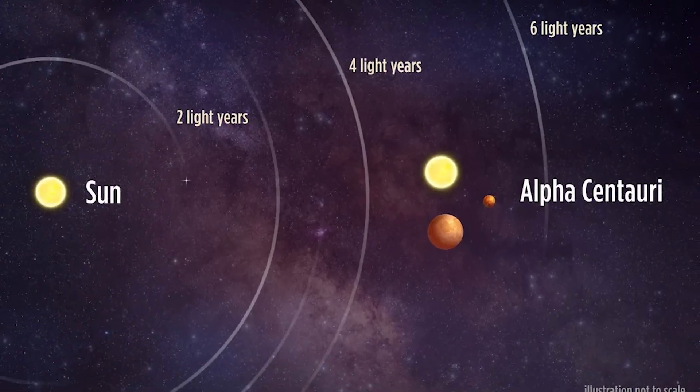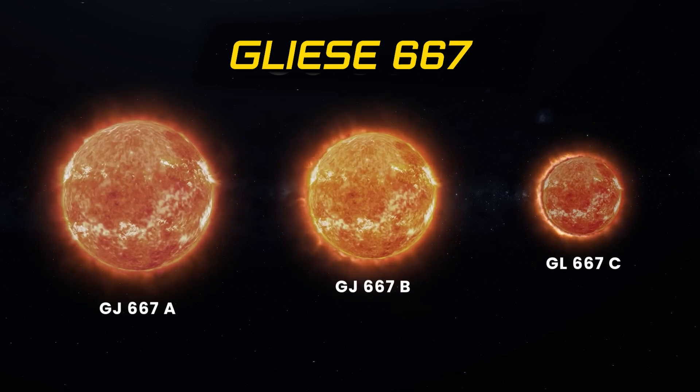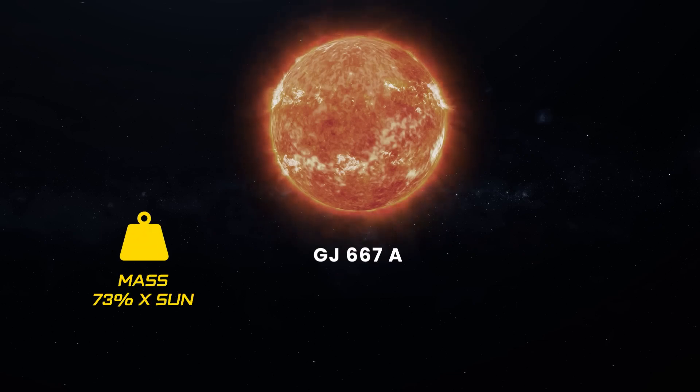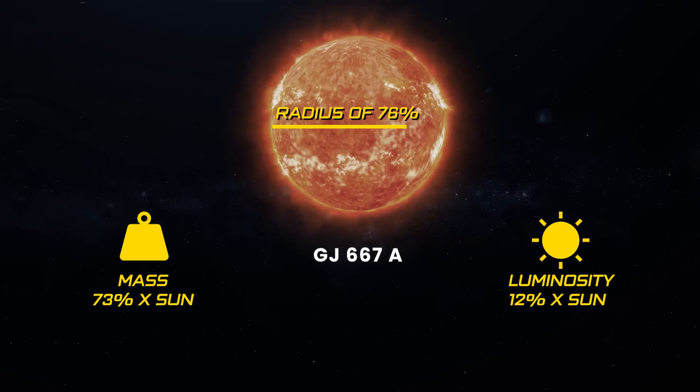Much like Alpha Centauri, the Gliese 667 system boasts three stars. Leading the pack is GJ 667-A, a K-type main-sequence star, reigning as the largest luminary in this celestial trio. This orange-red dwarf tips the cosmic scales with a mass comprising 73% of our Sun's, a radius spanning 76%, and a visual luminosity merely 12% that of our blazing star.